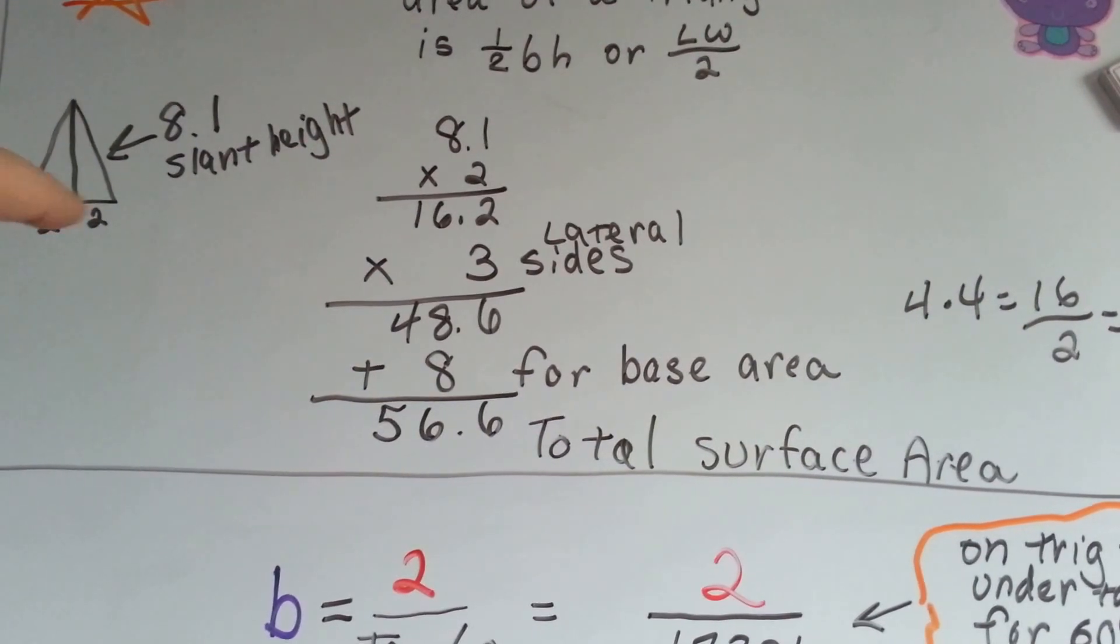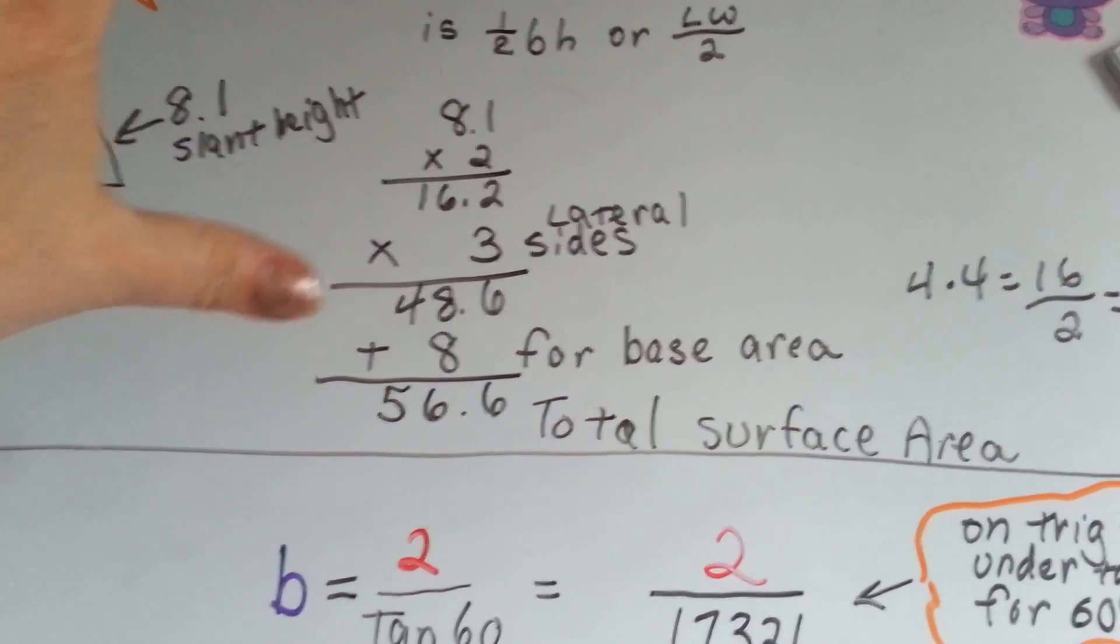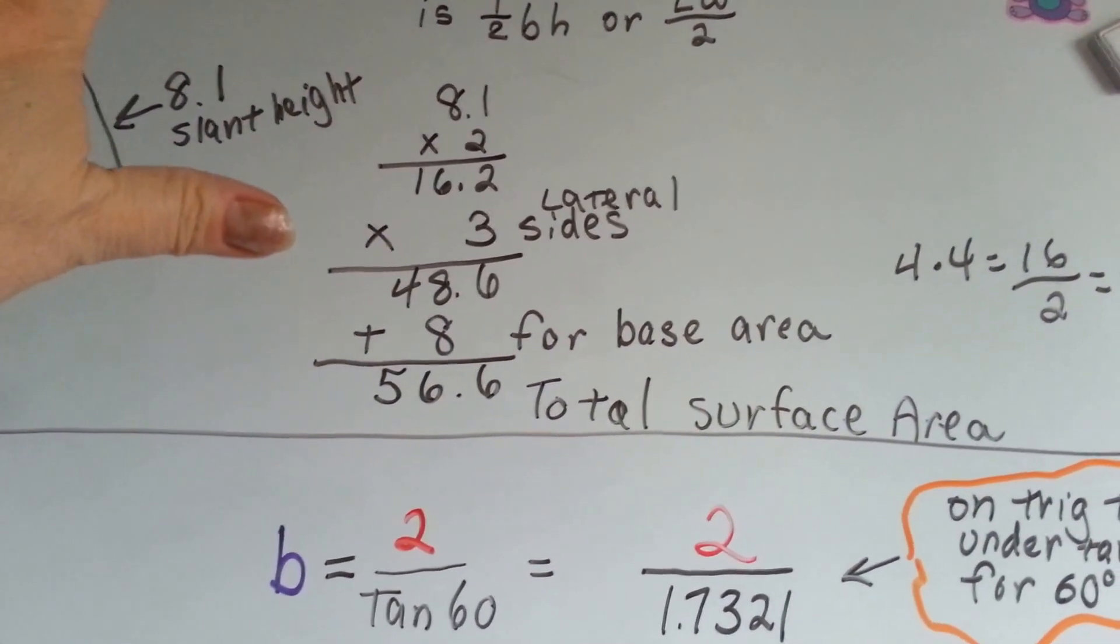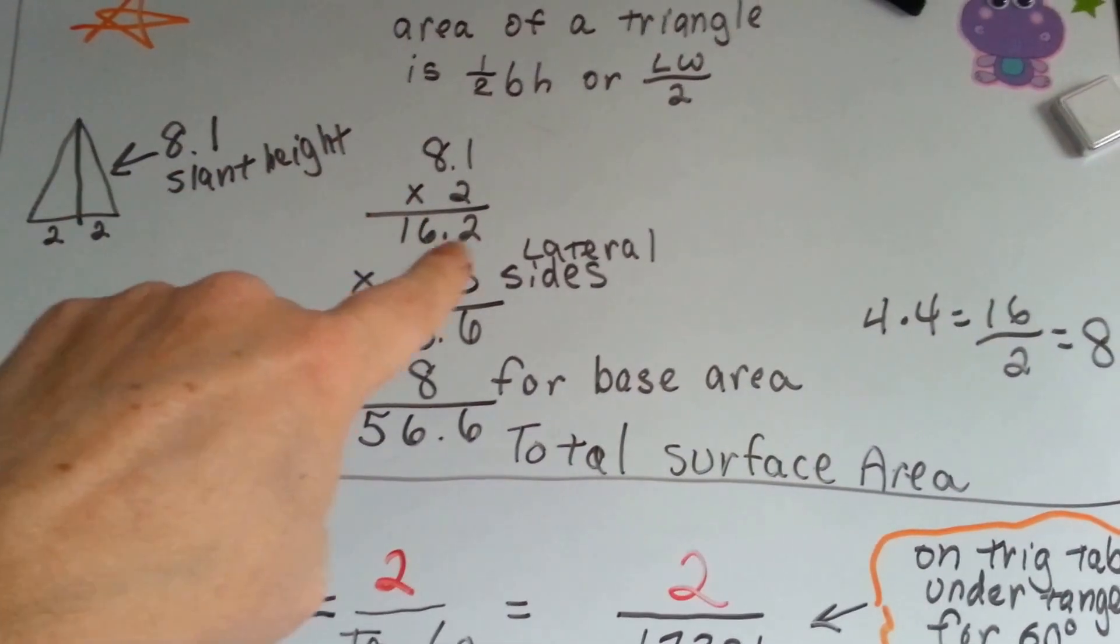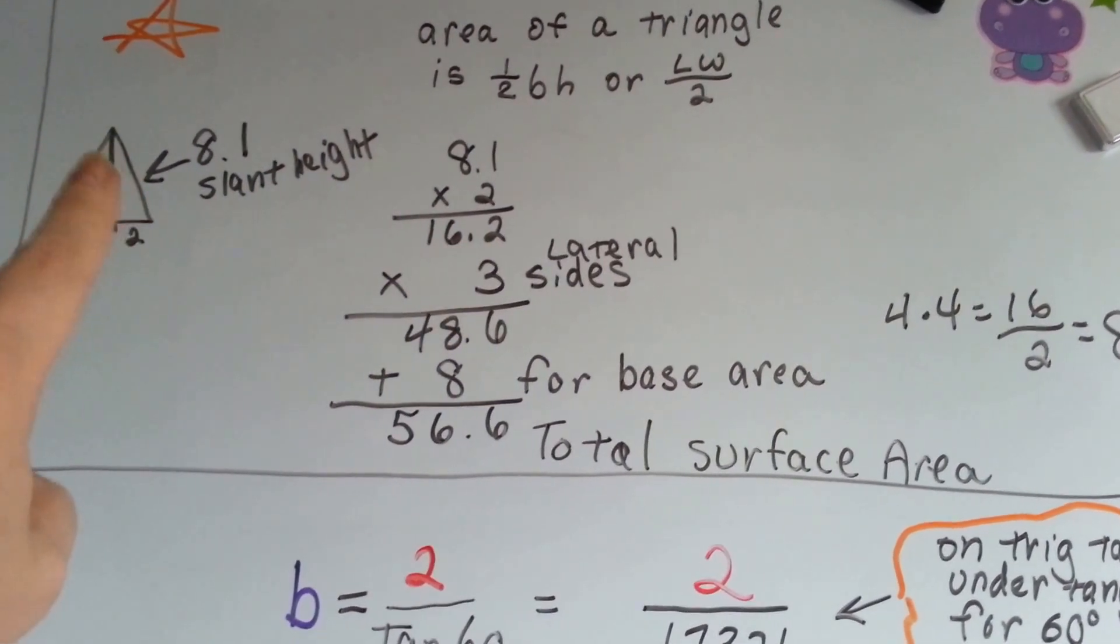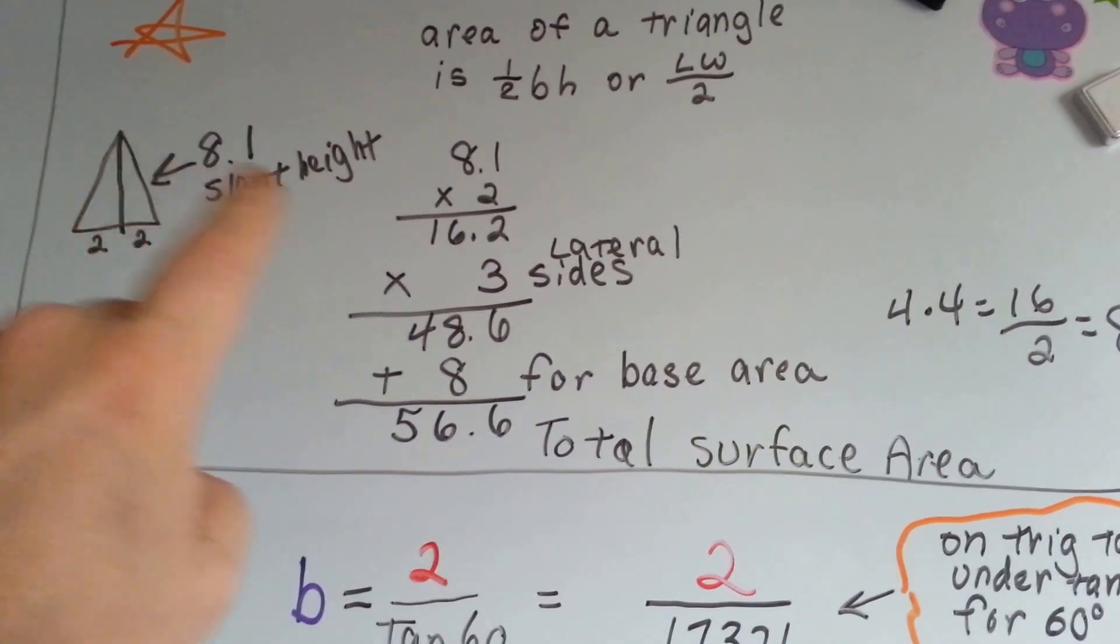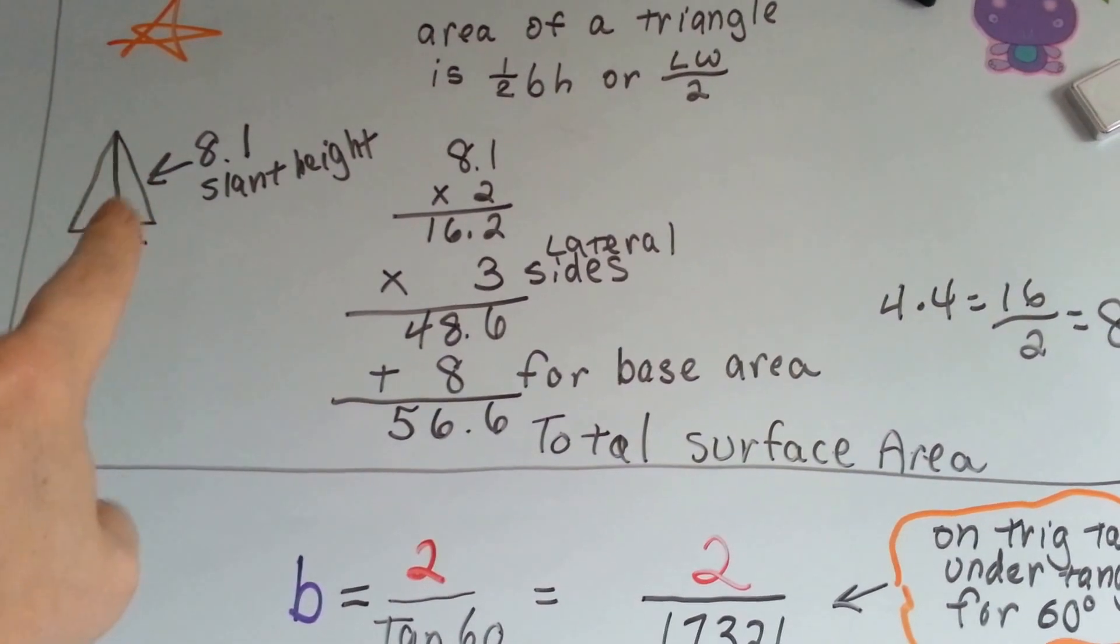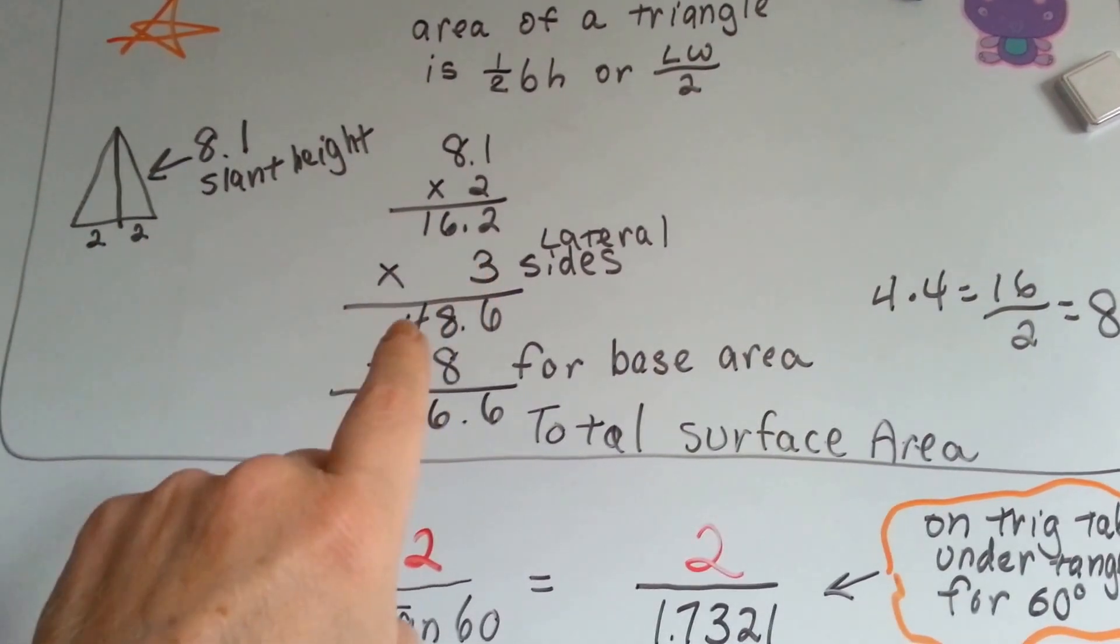Imagine if this triangle was flipped upside down and put right here so that it was a rectangle. Then that would be the area of both of these triangles, wouldn't it? We do want the area of both of these sides. So we do want 16.2. We've got three of these triangles in our pyramid plus a base. So we do 16.2, which is the size of this entire triangle here, times the three lateral sides and we get 48.6.